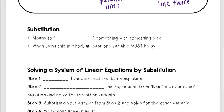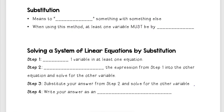But today we are going to be learning about substitution. So when I say substitution, that means to replace something with something else. And so when we're using this method, at least one variable must be by itself because we're going to be substituting a value for x or y into the other variable.